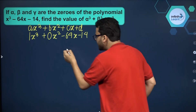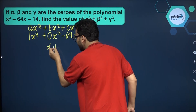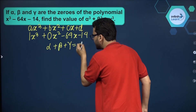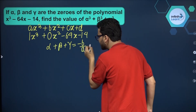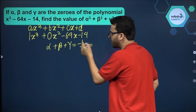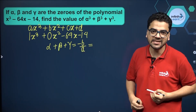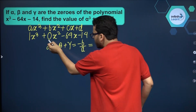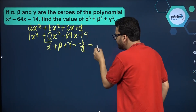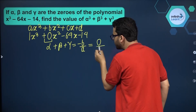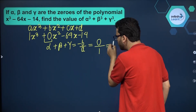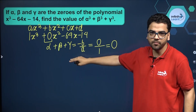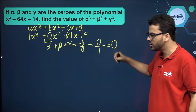Now what is the sum of the zeros of this cubic polynomial? That is alpha plus beta plus gamma, which is equal to minus b by a using Vieta's formula. You see b over here is 0, so that comes out to be 0 upon 1, which equals 0. So basically the sum of the zeros of this cubic polynomial is 0.